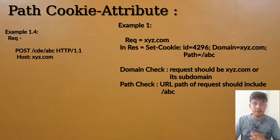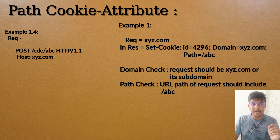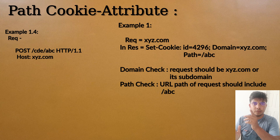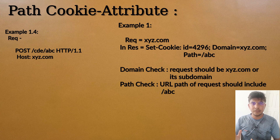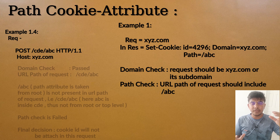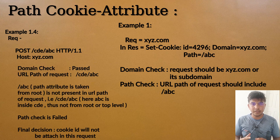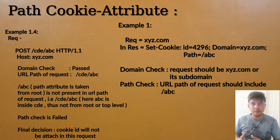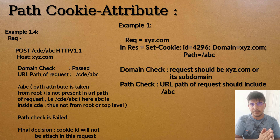Consider a request path of /cde/abc. Even though /abc appears in the path, this is not correct — in the path cookie attribute, /abc is set from the root. /abc means it starts from the root, but /cde/abc means /abc is nested inside /cde, which makes it incorrect. So the cookie will not be sent. Always evaluate the entire path from the root.